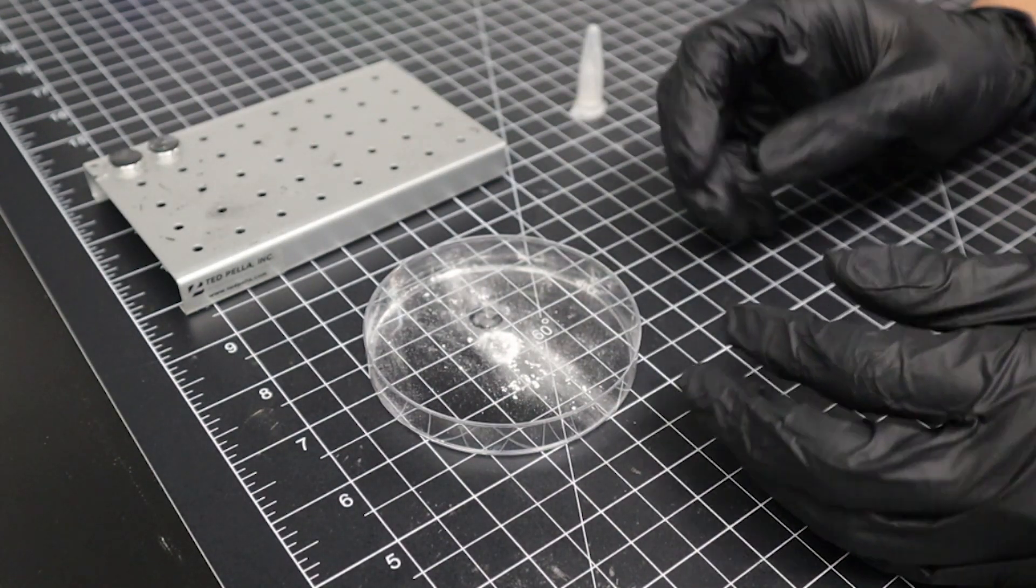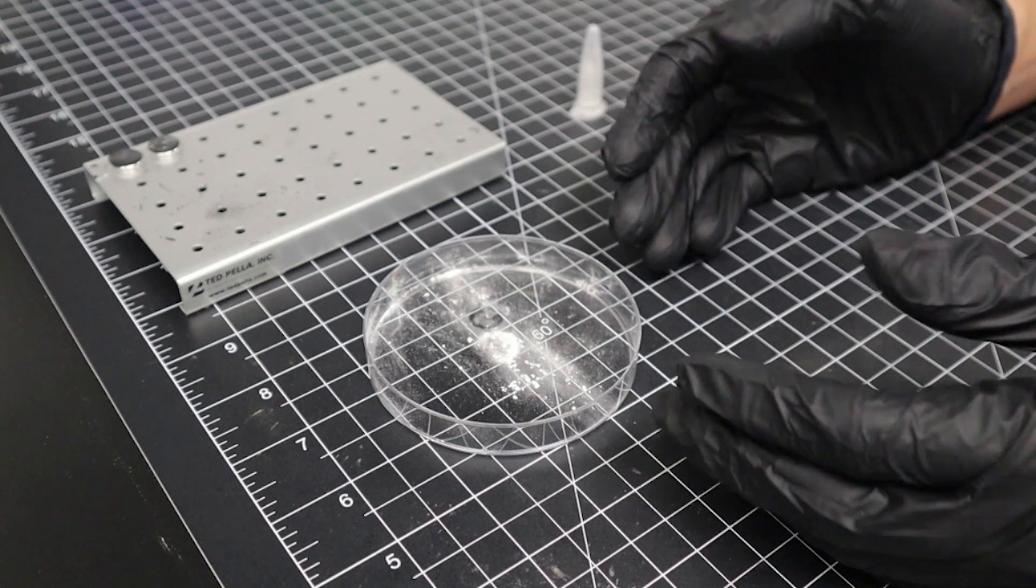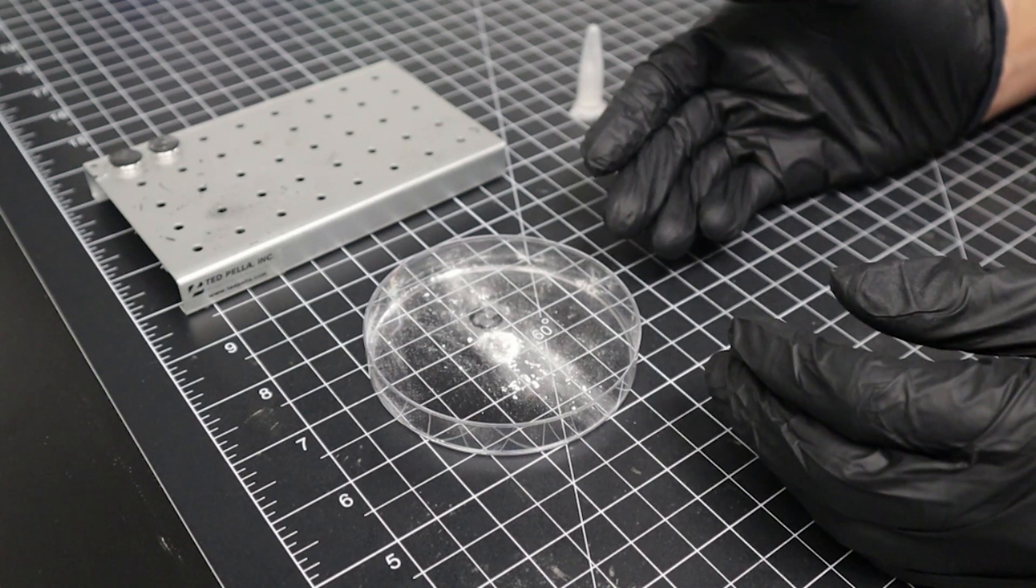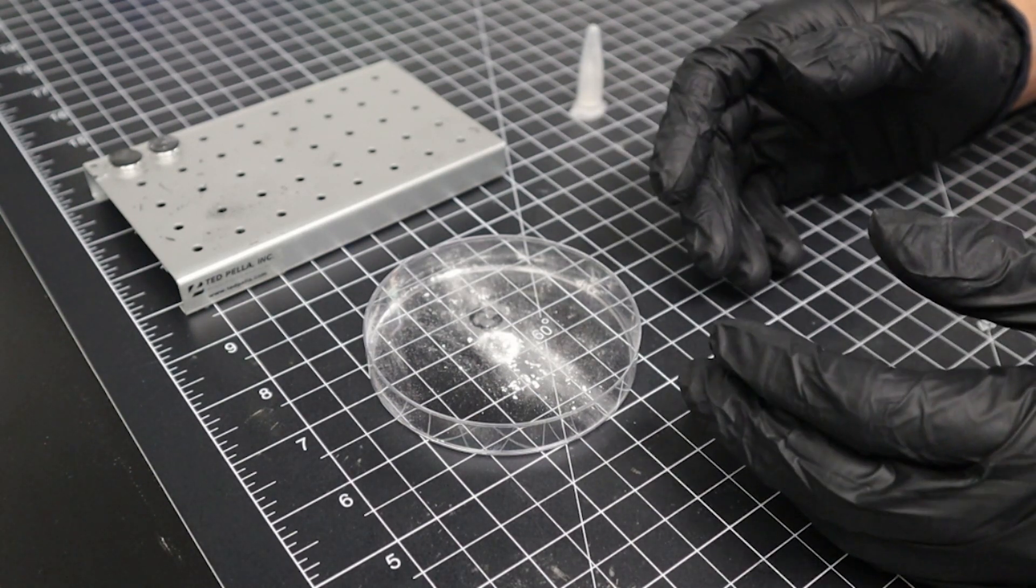The extra powder inside of the petri dish can then be used to prepare more sample stubs or return to its original container. Now let's talk about drop casting.